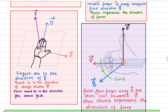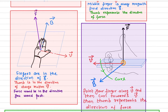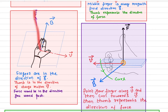The other rule is the palm rule. Lie down your palm. Your four fingers give you the direction of the magnetic field — they have to be aligned in the direction of the magnetic field. Your thumb points out in the direction of the velocity. Then the direction perpendicular to this palm gives you the direction of the force.